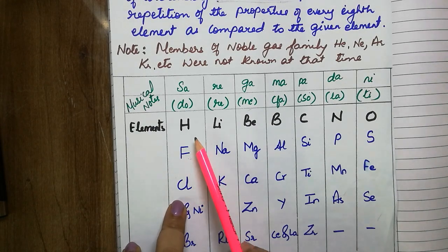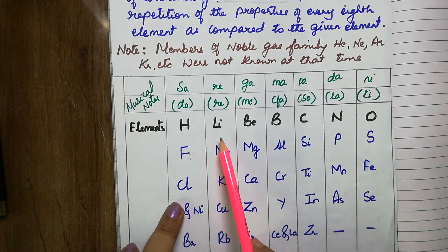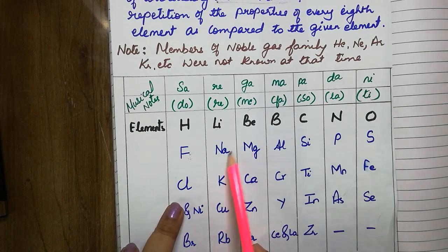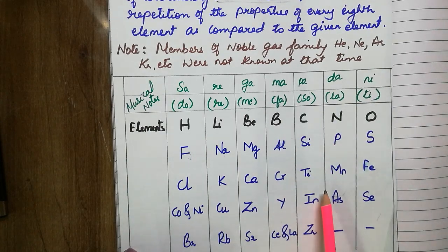To his surprise, he found that the properties of the first element are similar to the 8th, second one similar to the 9th, third one to the 10th. So he placed them in this order.